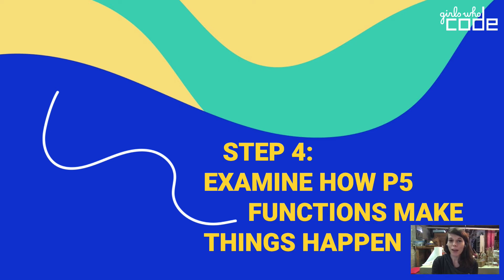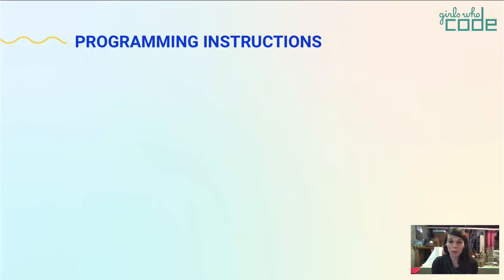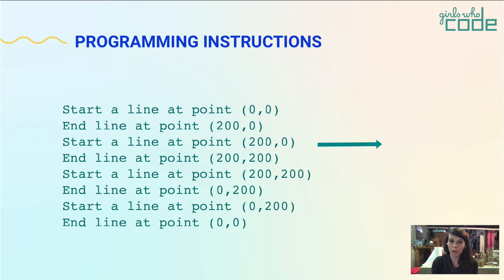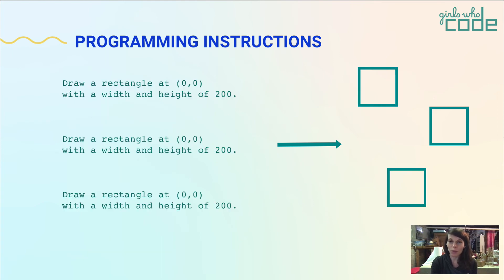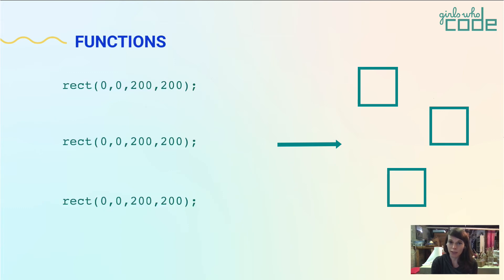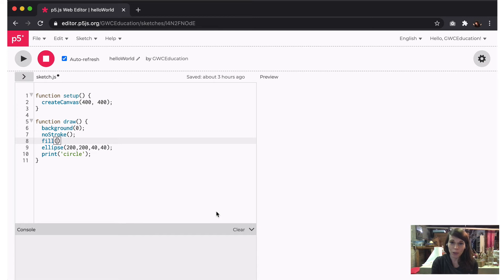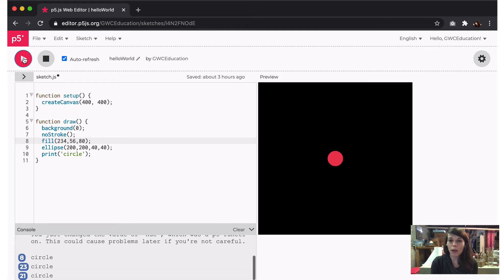Step four: examine how P5 functions make things happen. We can define a program as a set of instructions that you create for a computer to follow. Instead of writing the same instructions over and over, we can group instructions into chunks so we can reuse them later on — these chunks are called functions. Functions are lines of code that perform a set of actions. You can think of them like verbs: they do something, like draw a circle or listen for a mouse press. In P5, we give instructions to our program in the form of functions. Most of the functions you will use are defined in the P5.js library, and you can also create your own functions.